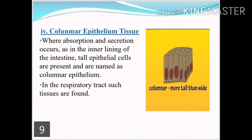The fourth type of epithelial tissue is columnar epithelial tissue. As their shape is like a columnar structure — tall and comparatively wide — they are called columnar epithelial tissue. Wherever absorption or secretion occurs in the body, this tissue is present, such as in the small intestine where food absorption occurs, in the large intestine where liquid absorption occurs, and also in the respiratory tract.